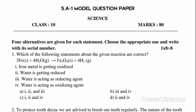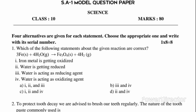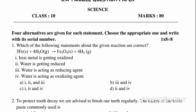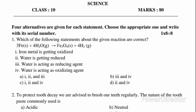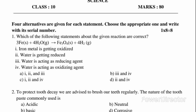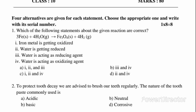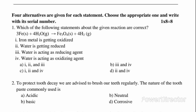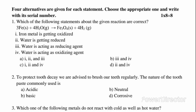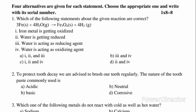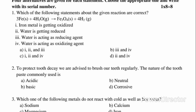Question 1: Which of the following statements about the given reaction are correct? 3Fe + 4H₂O → Fe₃O₄ + 4H₂. A. Iron metal is getting oxidized. B. Water is getting reduced. C. Water is acting as reducing agent. D. Water is acting as oxidizing agent. Options: 1. A, B and C; 2. C and D; 3. A, B and D; 4. B and D. Answer: A, B and D.